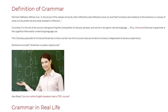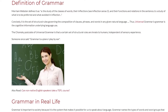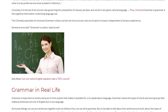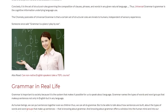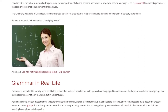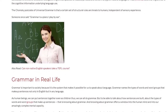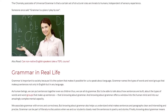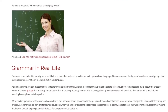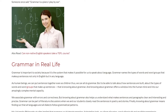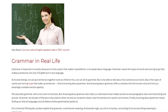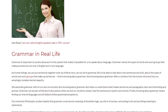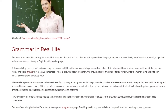Someone once said grammar is a piano I play by ear. Grammar is important to society because it is the system that makes it possible for us to speak about language. Grammar names the types of words and word groups that make up sentences, not only in English but in any language. As human beings, we can put sentences together even as children — thus we can all do grammar. But to be able to talk about how sentences are built, about the types of words and word groups that make up sentences — that is knowing about grammar. And knowing about grammar offers a window into the human mind and into our amazingly complex mental capacity.